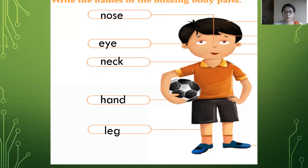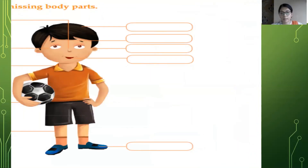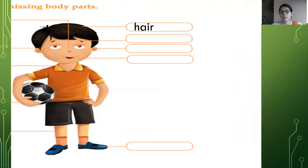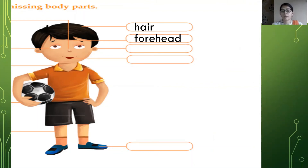Now let's see the other side of the picture. The first line is pointing towards the hair, so write the spelling of hair: H-A-I-R, hair. The second blank is pointing towards the forehead: F-O-R-E-H-E-A-D, forehead. The next one is pointing towards the ear, so write the spelling of ear: E-A-R, ear. So on this side you wrote hair, then forehead, then ear.